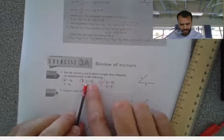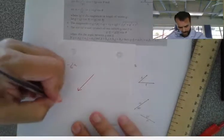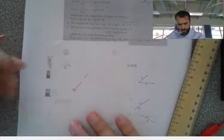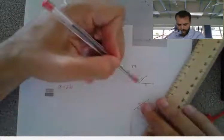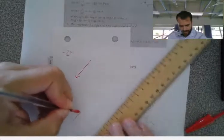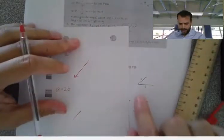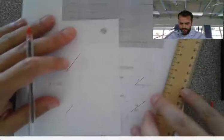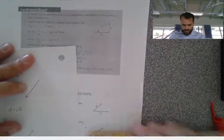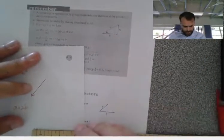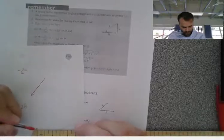All right, next one, A plus 2B. A plus 2B. So that's going to be A, the first vector, exactly as it appears, and then 2B. So B looks like it's about 2 centimeters long. Yep. So 2B is going to be 4.